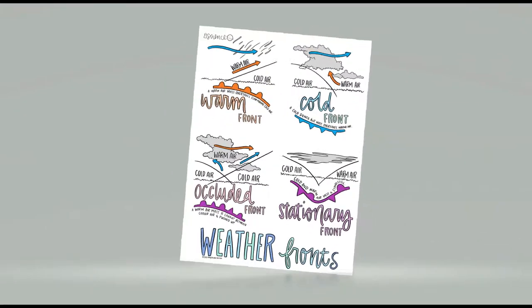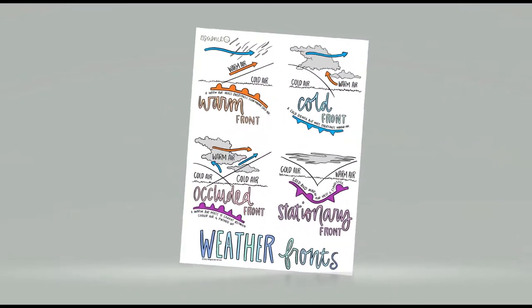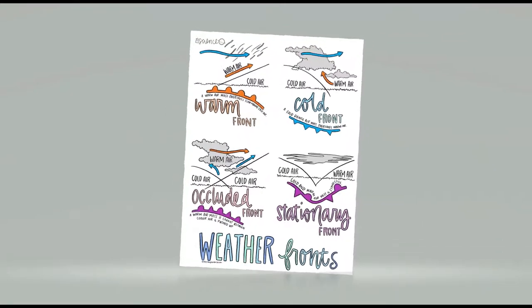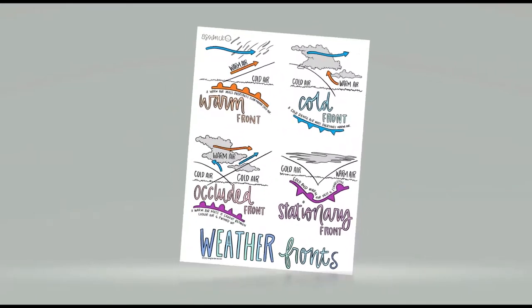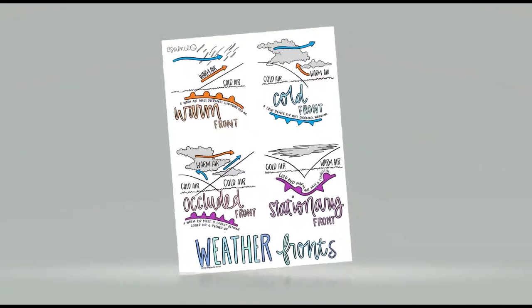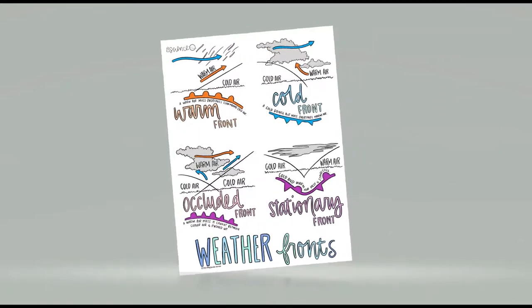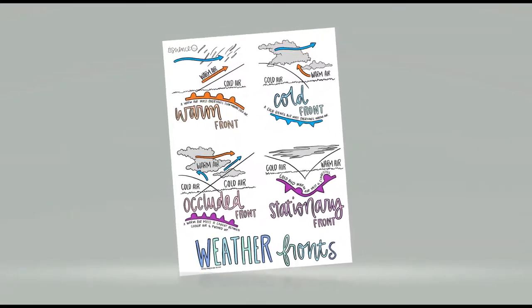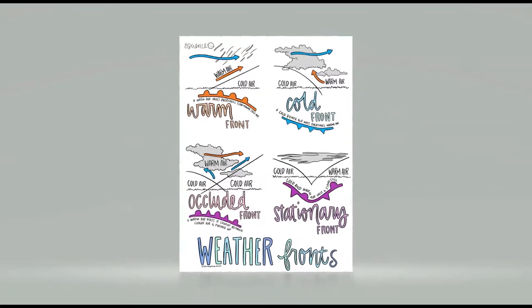Let's gather round and learn about the four weather fronts: warm, cold, occluded, and stationary. When a warm air mass overtakes a slower moving cold air mass, this is called a warm front.